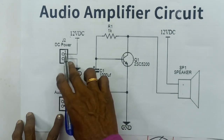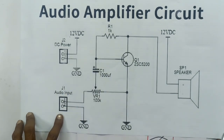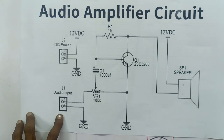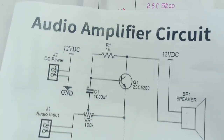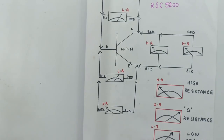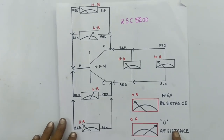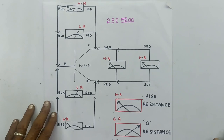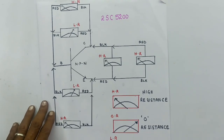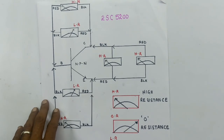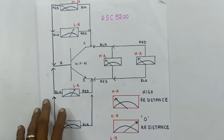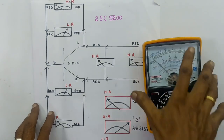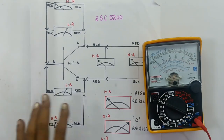This is a power pack. It is a very simple circuit — it will be easy to assemble. This is a transistor. If you check the transistor, you can use an analog multimeter or a digital multimeter.